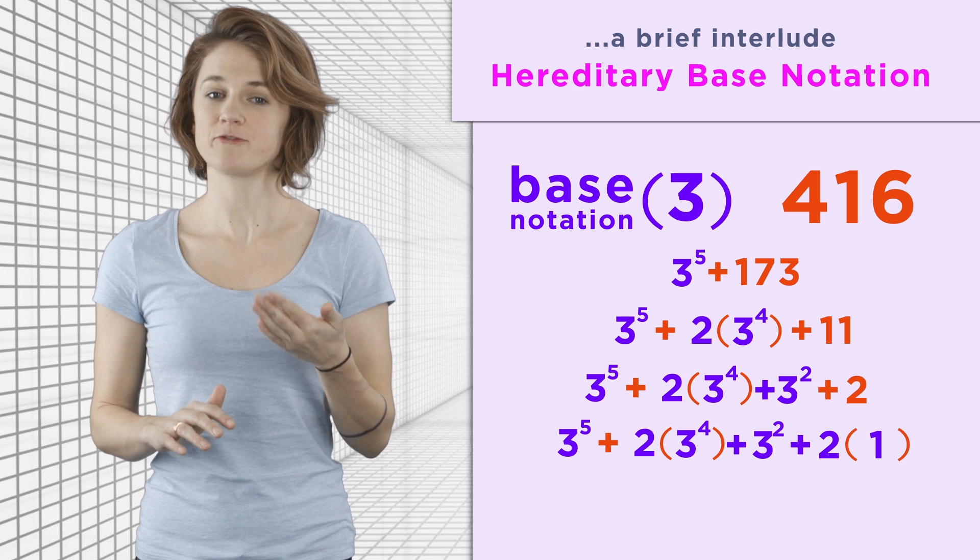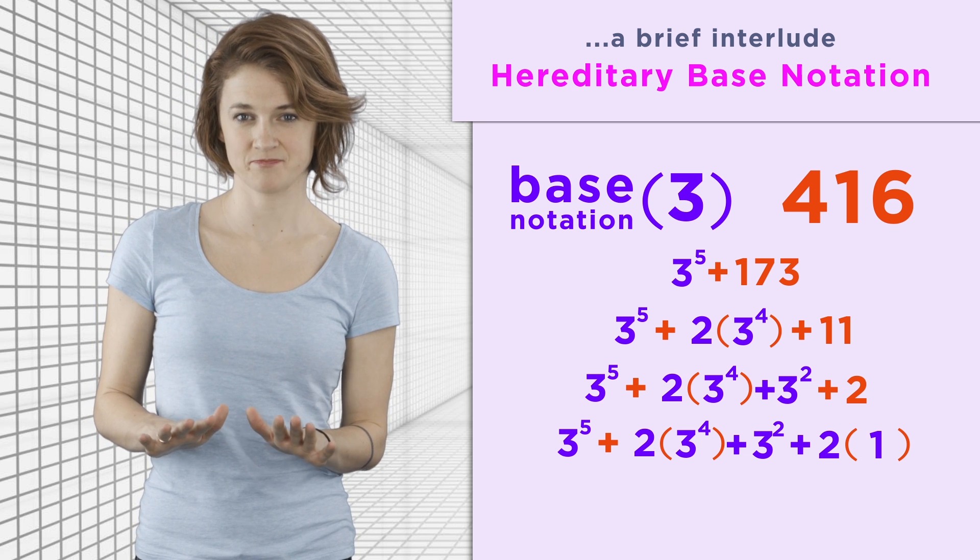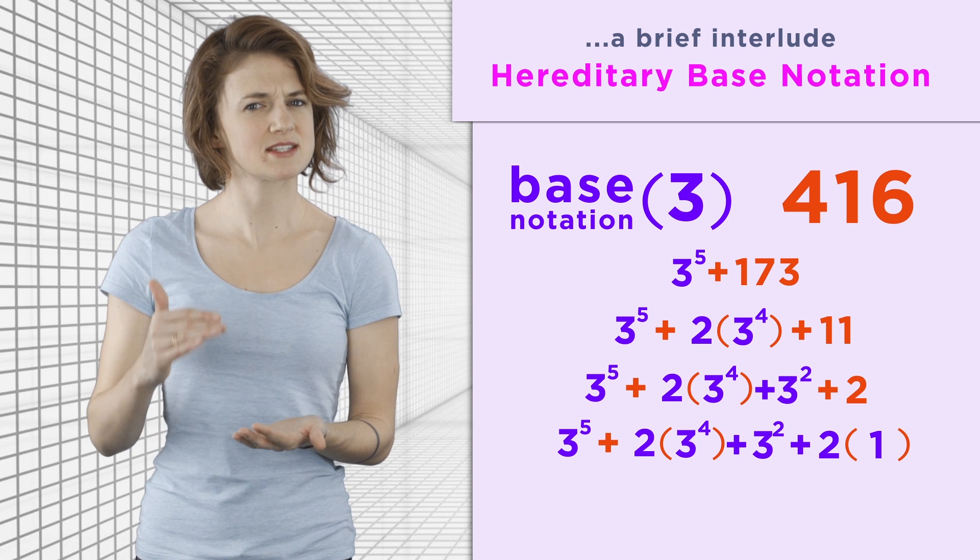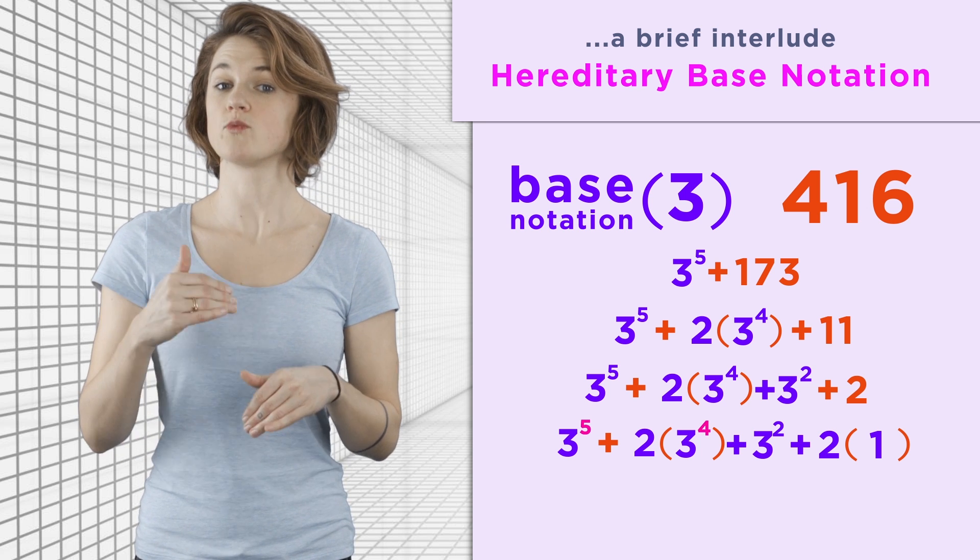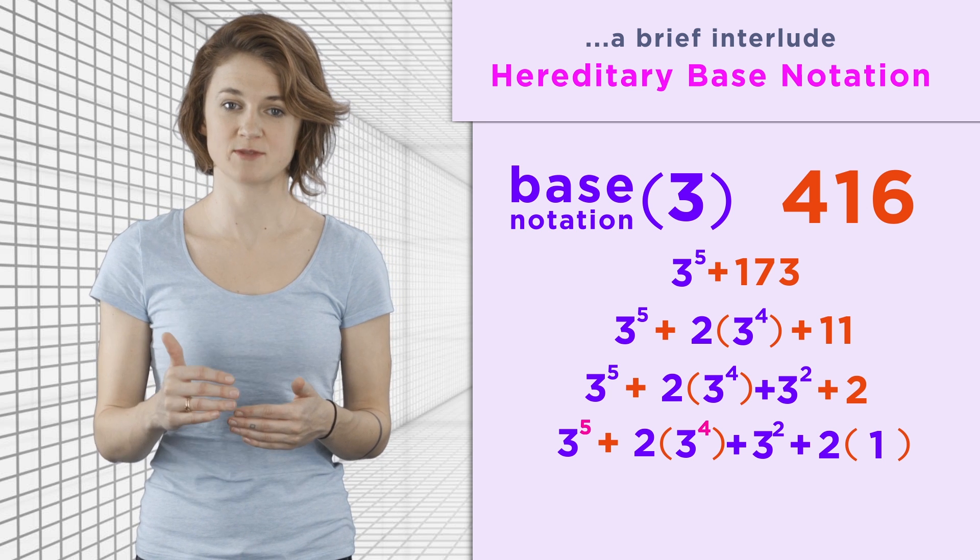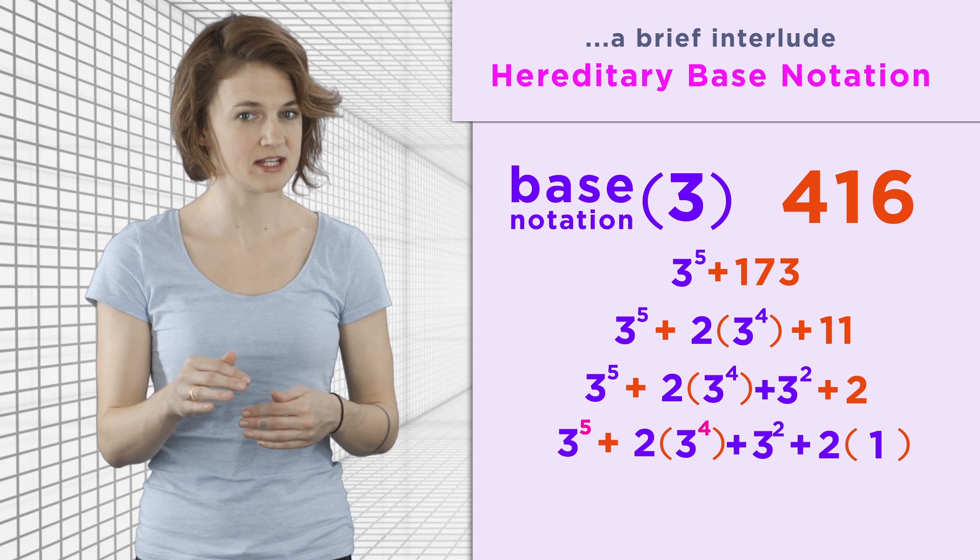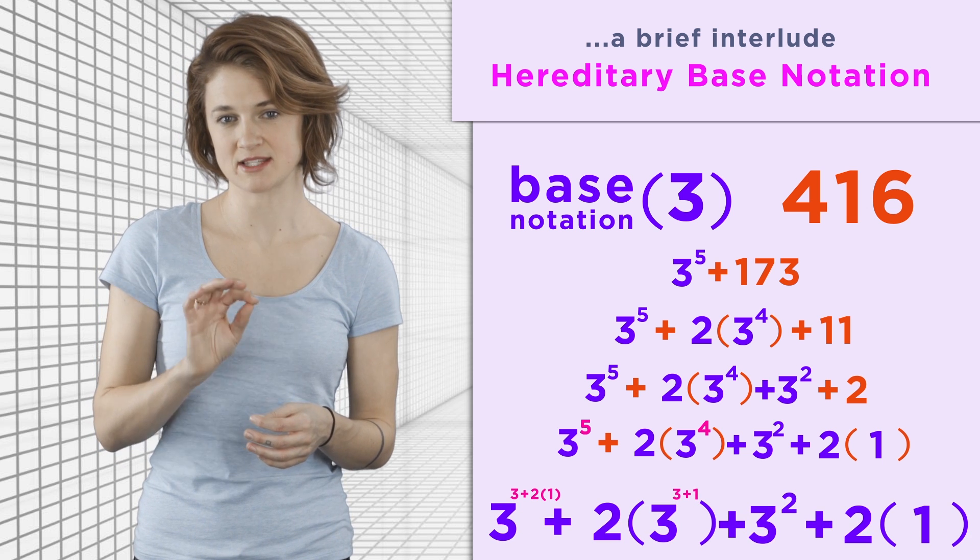Now, we have 416 written in normal base 3 notation. But notice that the exponents still have numbers bigger than 3 in them. To write it in hereditary base 3 notation, we'll replace each of the exponents by their base 3 representative. In the end, 3 is the biggest number to show up in this expansion.